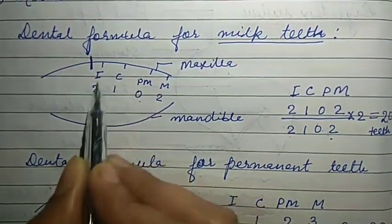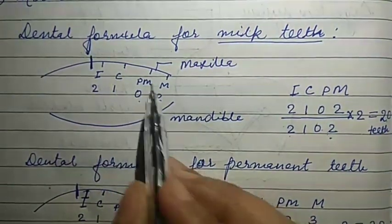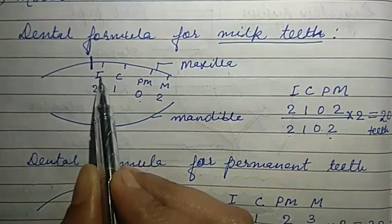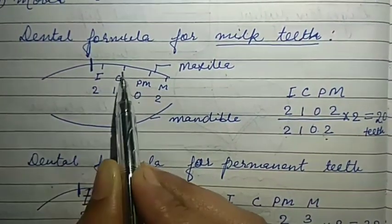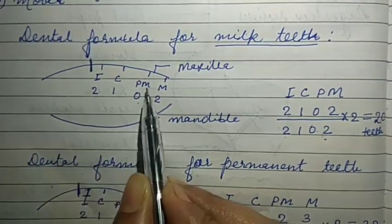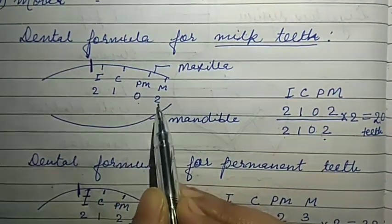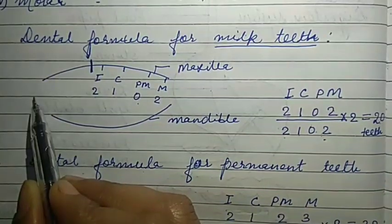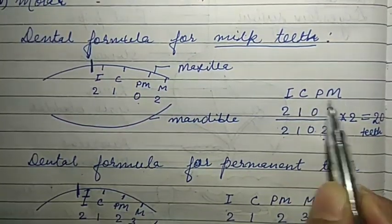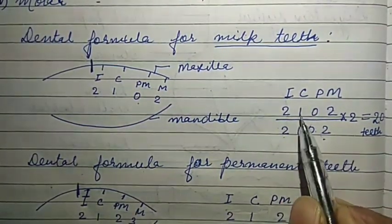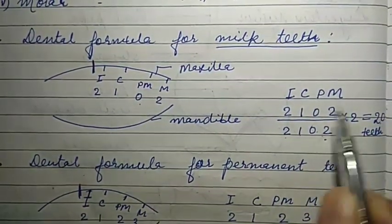Whatever number of teeth is present on the left side is the same on the right side, and similarly on the lower side. In milk teeth: incisors are 2, canines are 1, premolars are 0 (absent in milk teeth), and molars are 2. So the dental formula for milk teeth is 2, 1, 0, 2 / 2, 1, 0, 2 multiplied by 2, giving a total of 20 teeth.